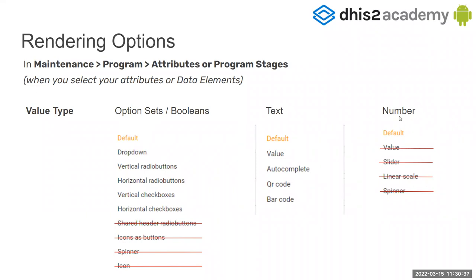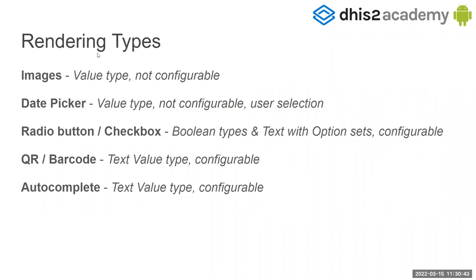Just remember: images will render directly — if you put the value type it's not configurable, it will render automatically. The date picker is also not configurable, but you can configure it via user selection. The radio button and checkbox can be applied to value types of text with option sets, and this is configurable. The QR barcode is also for text value types and it's configurable. Autocomplete is also for text value types and it's configurable.